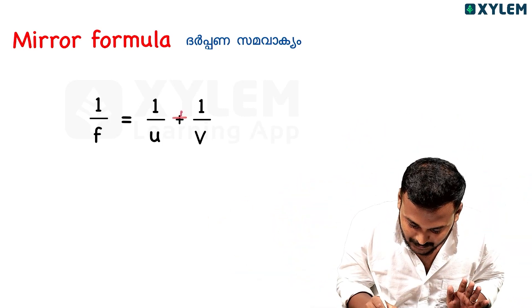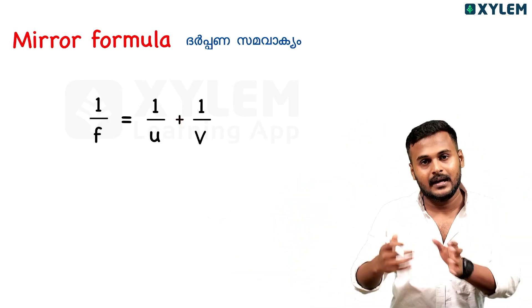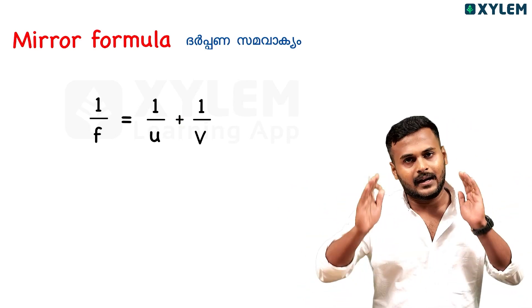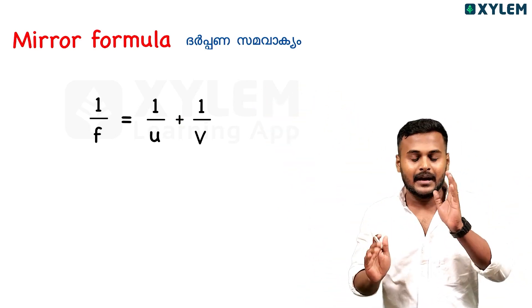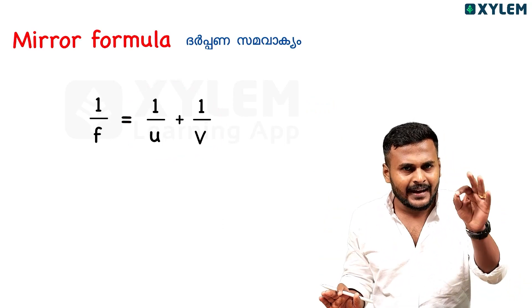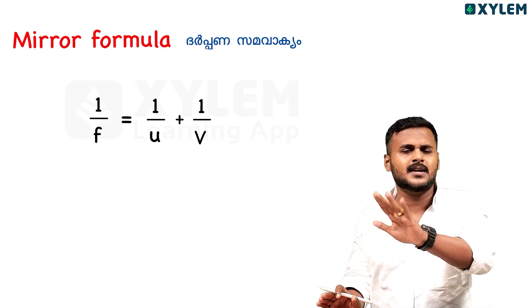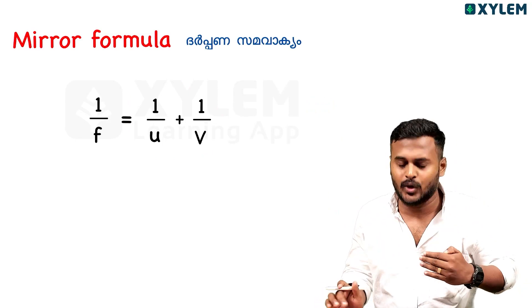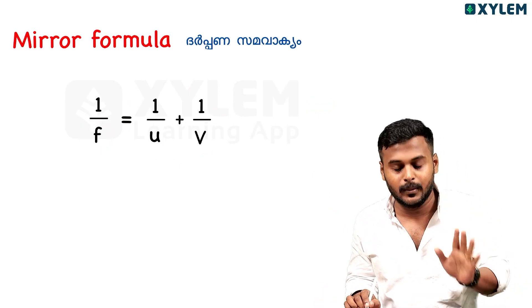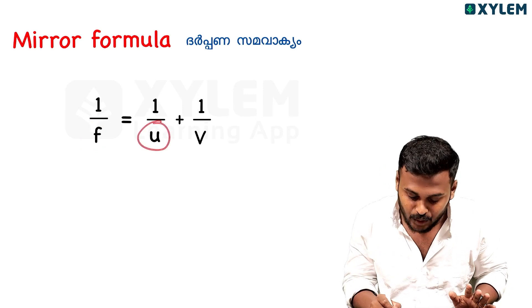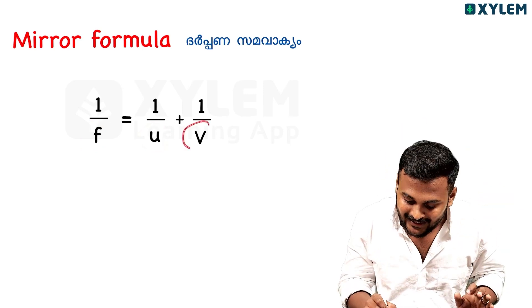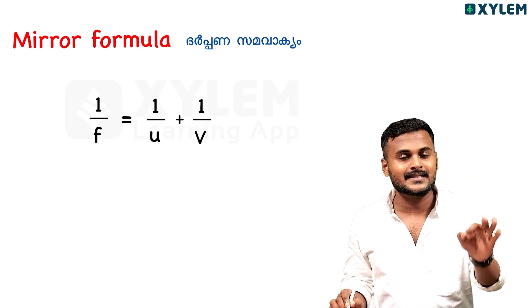This is the mirror formula. If I have a plus, that is the mirror formula. If I have a minus — 1 by V minus 1 by U — that is the lens formula. F is the focal length, U is the object distance, V is the image distance.